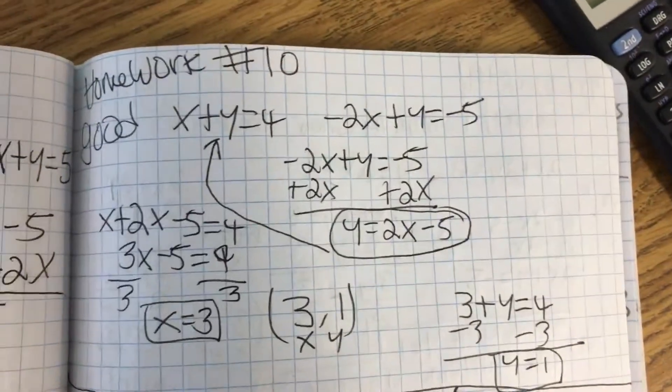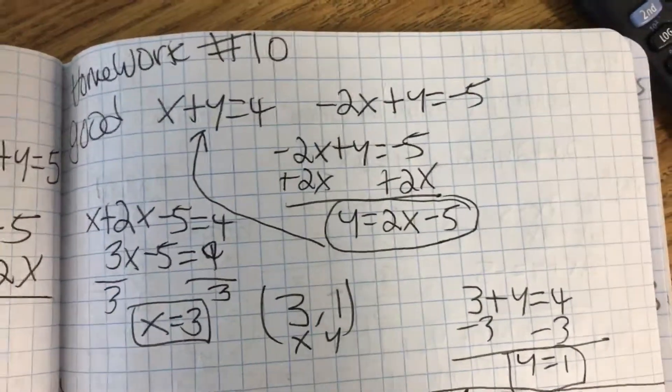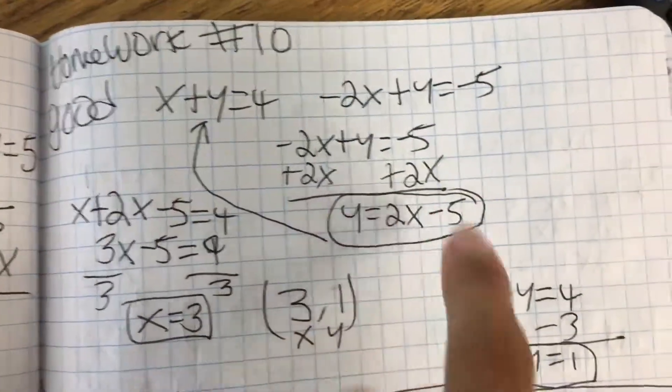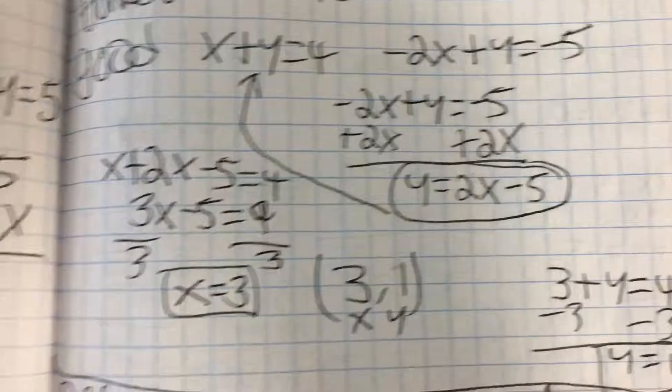I'm going to work video number 10. A good example - I'll write this one, and then minus 2x on both sides, y equals 2x minus 5.